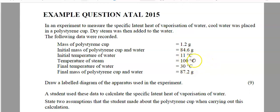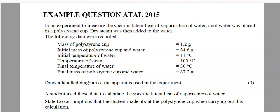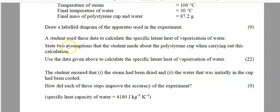We can work out clearly the drop in temperature of the steam. The final mass of the polystyrene cup and water was 87.2 grams, up from 84.6, so by subtraction we can find the mass of the steam. Draw a labelled diagram of the apparatus used — that's one you have to learn. Draw it in black and label in red. A student used this data to calculate the specific latent heat of vaporization of water. State two assumptions the student made about the polystyrene cup: first, it has a low heat capacity; second, polystyrene is a good insulator of heat and is not a conductor.